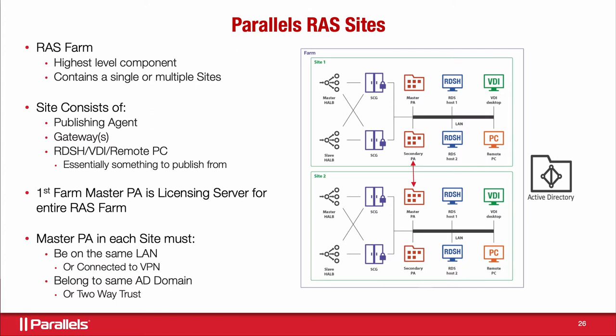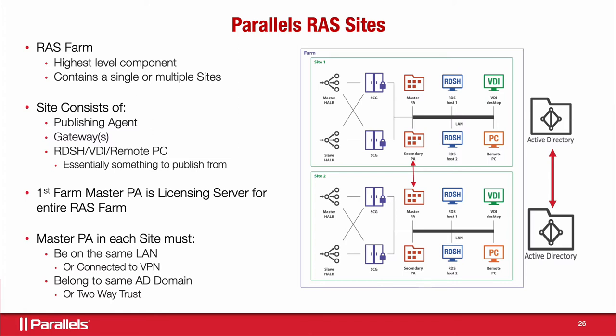All sites in a farm must be in the same Active Directory domain, or have a two-way trust relationship between domains. If you have multiple independent Active Directories with no relationship, use separate farms instead of sites. Multiple farms cost the same as one farm from a Parallels perspective — you just have two keys with the same total number of users. Sites are most useful when users float between locations, allowing their license to follow them.